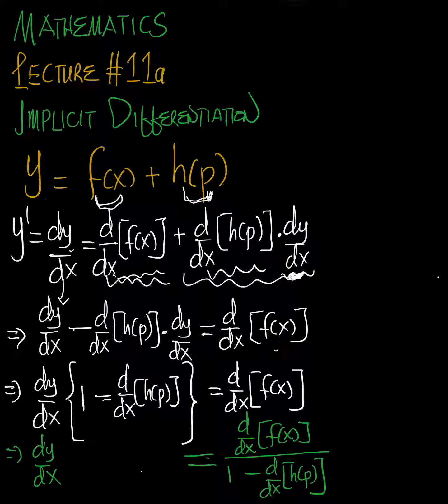We factor dy/dx out on the left-hand side and get one minus the differential of h(p). Then on the right side, we divide the differential of f(x) by 1 minus d/dx of h(p).